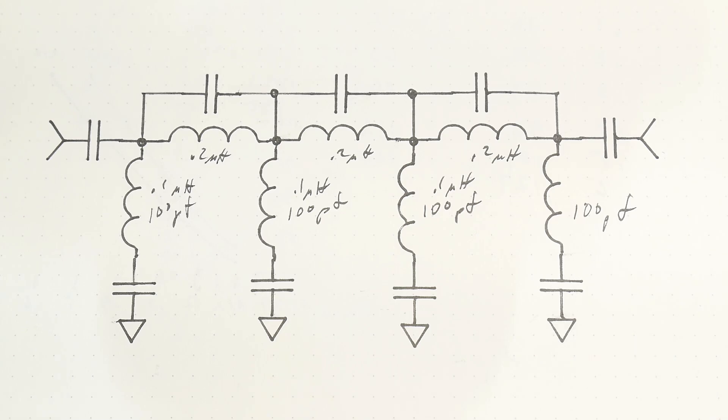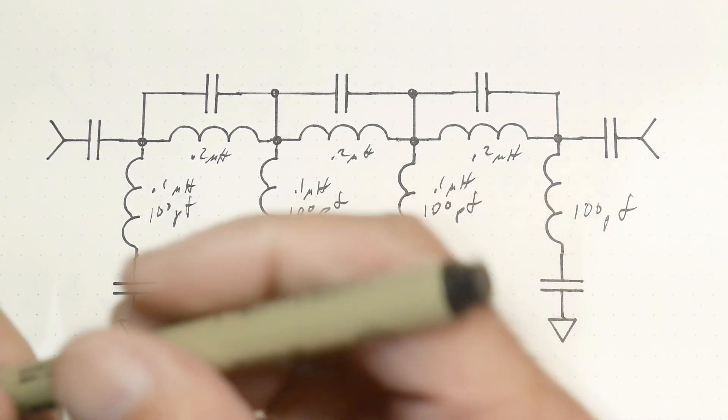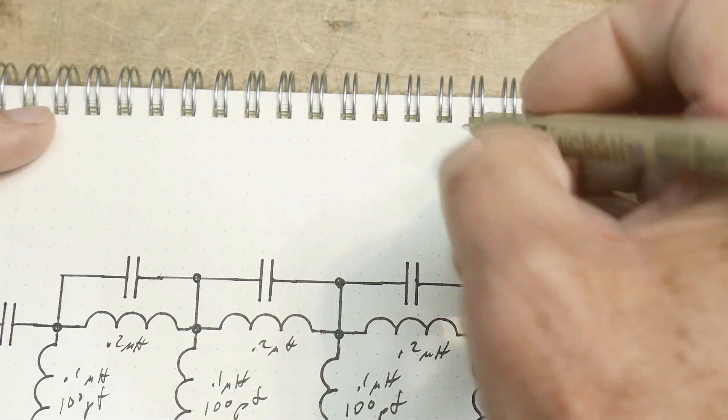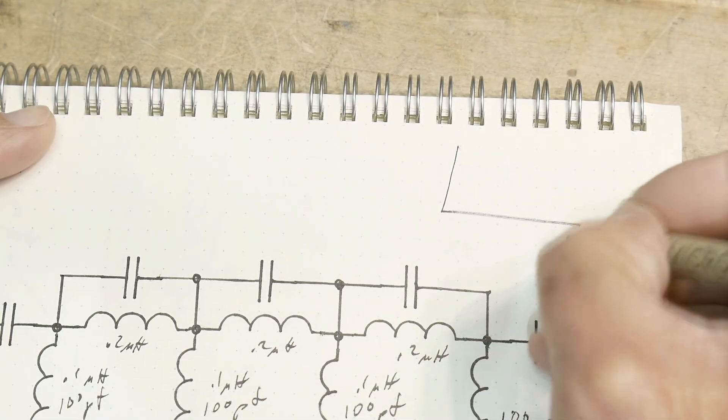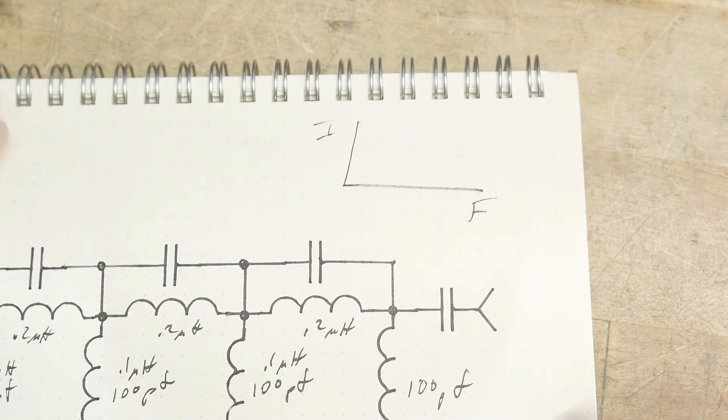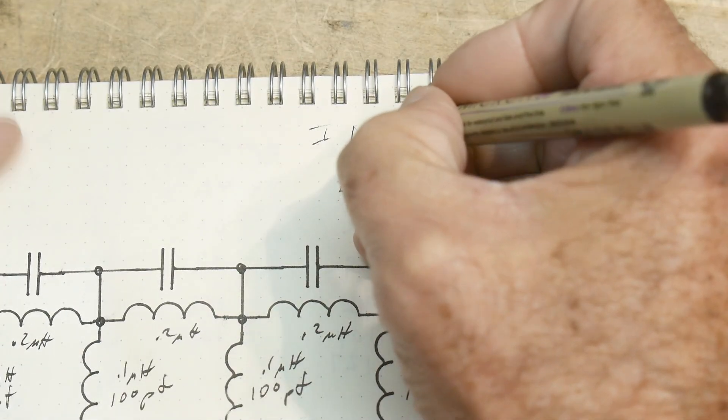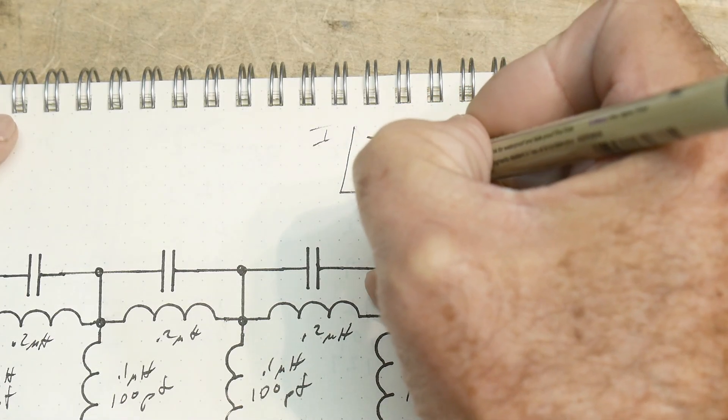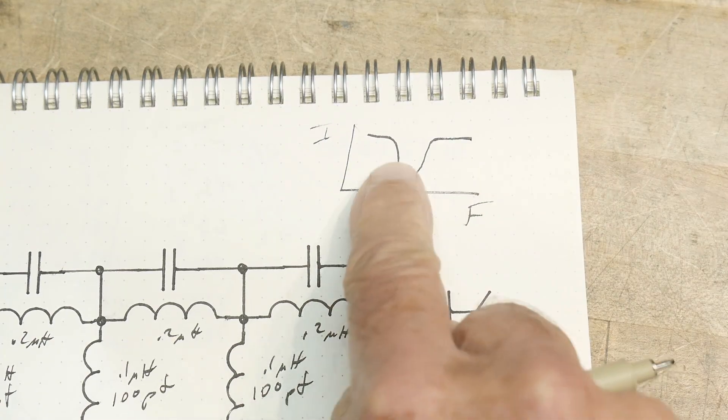Together they make up a band reject filter. If you draw a picture of it, it would be frequency versus amplitude - it's going to drop and then come back again. It's going to reject a certain frequency range, and this one should reject 88 megahertz to 108 megahertz.